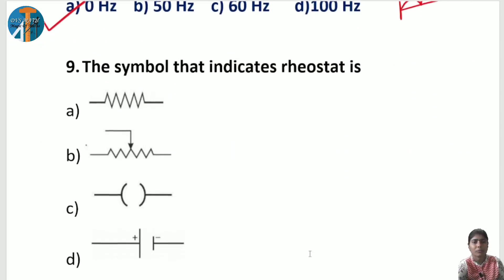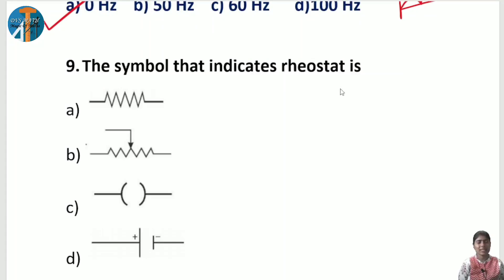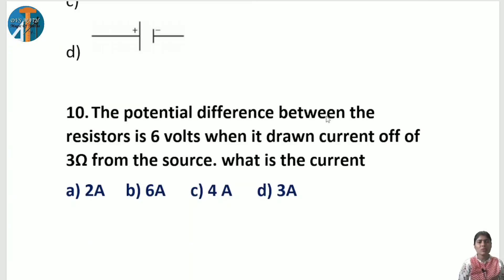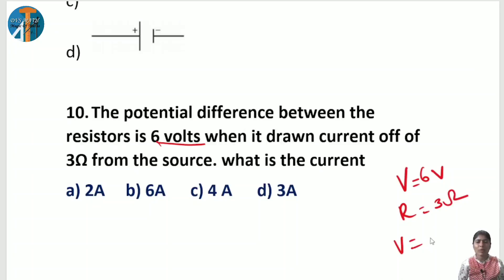Next question: the symbol that indicates a rheostat — a rheostat means a variable or changing resistance. The first option is a fixed resistor, the second is an open switch, and the third is a cell. The rheostat symbol shows a resistance with an arrow indicating variability. Identify it correctly. Next question: the potential difference between resistors is 6 volt and resistance is 3 ohm. What is the current?